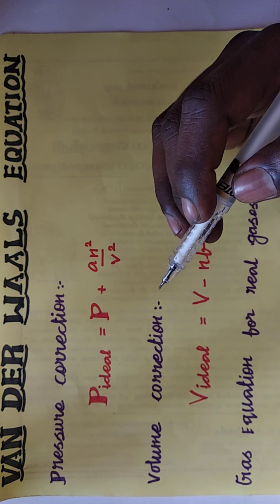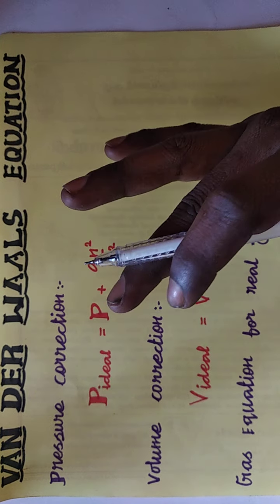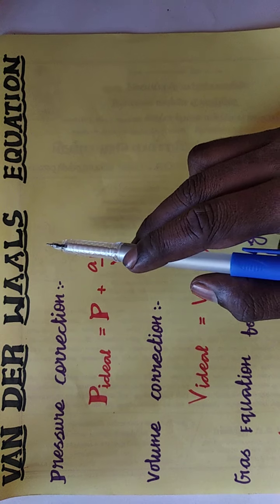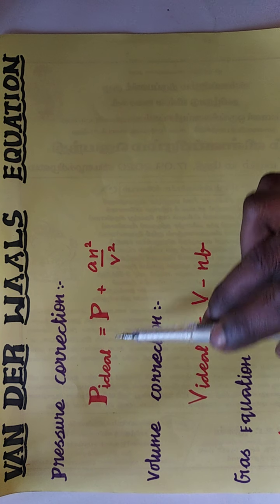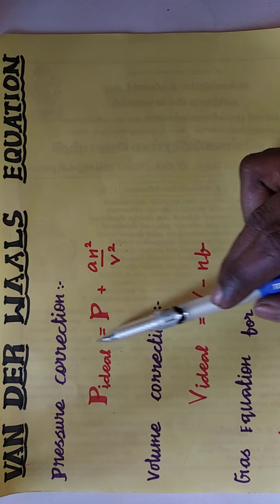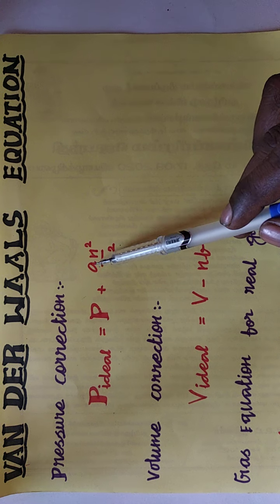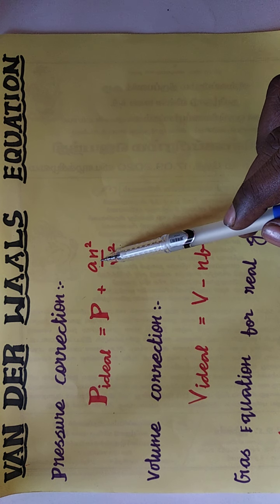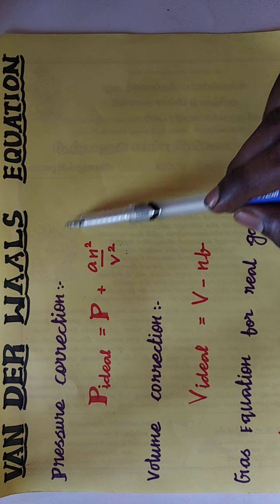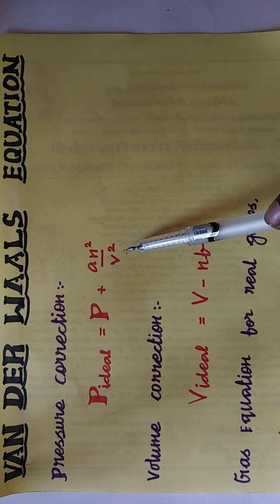The pressure and volume corrections are given in an elaborated way in your textbook, but I didn't explain them since the government may reduce the syllabus. Only the final equation I have taken. The correction made by Van der Waals is: P_ideal = P + (an²/V²). Here 'a' is called the Van der Waals constant. This is the corrected form of pressure.